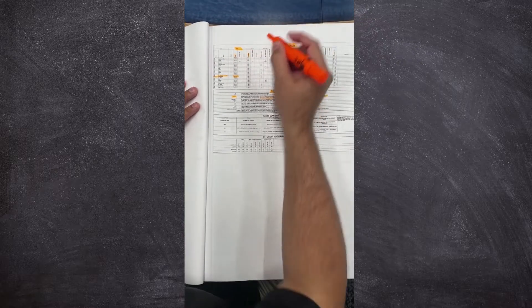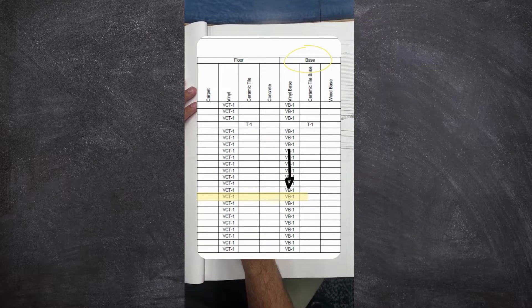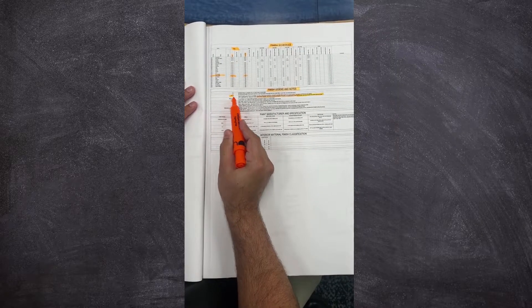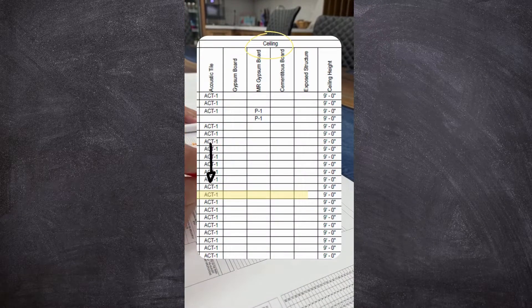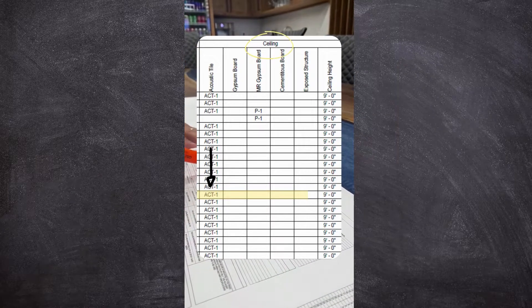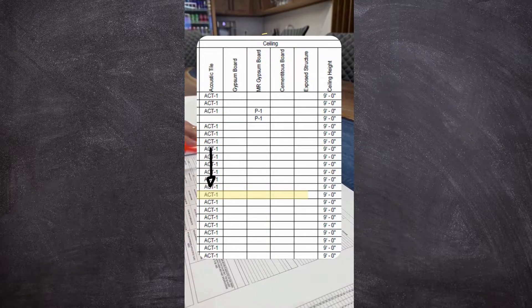Then here it will talk about your baseboard, VB number 1. Here on your finish legend, you'll go to VB number 1. It's a vinyl base. The ceiling here is ACT 1. You go here to your finish legend and note, and you do the same thing as you go through the legend.